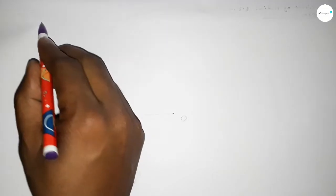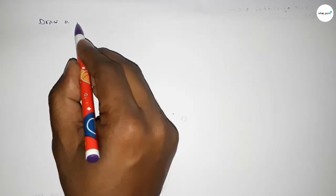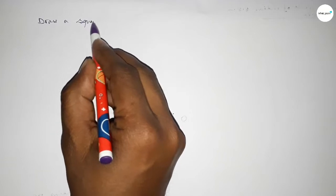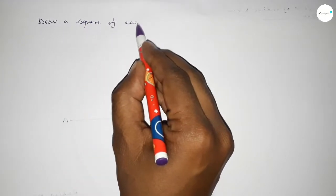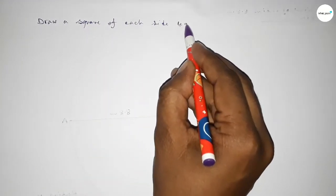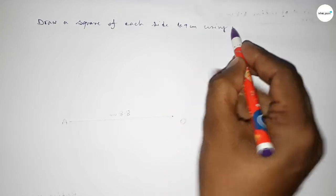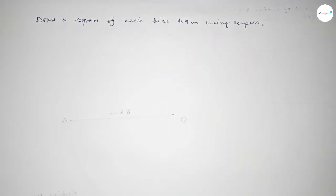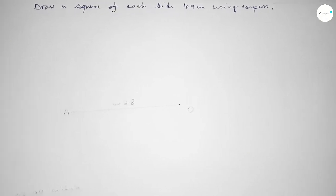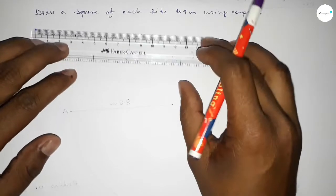Hi everyone, welcome to SI Share Classes. Today in this video we have to draw a square of each side 4.9 centimeters using a compass. So let's construct the square and start the video.